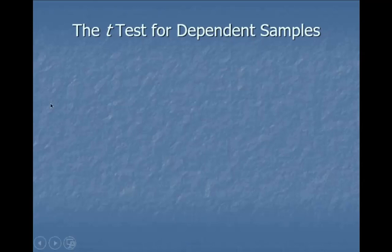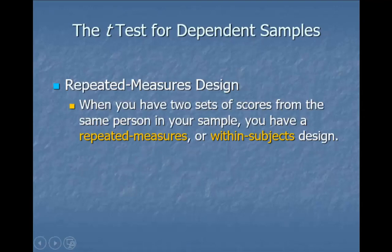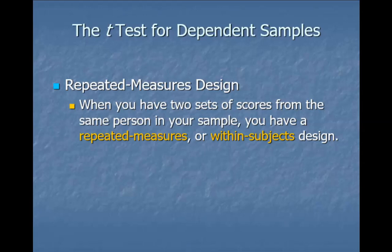The dependent t is the test we use when we have a repeated measures design. A repeated measures design is when we look at two sets of scores from the same person — that's why we call it repeated measures. We also call it a within-subjects design because we're looking within the subject.